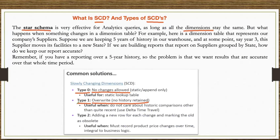If you are looking to manage history, then go with Type 2. Type 2 — whenever any change data comes from source, it will add a new record.